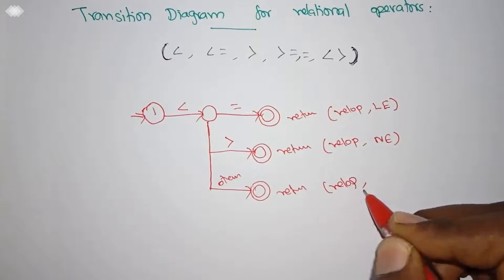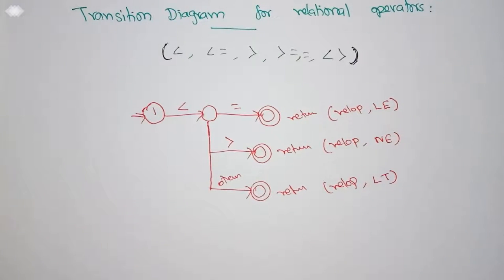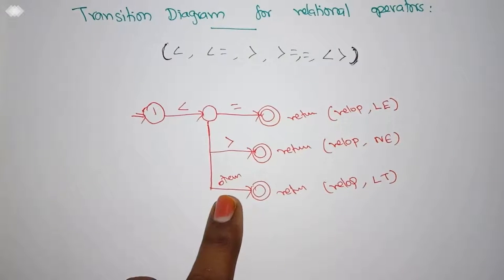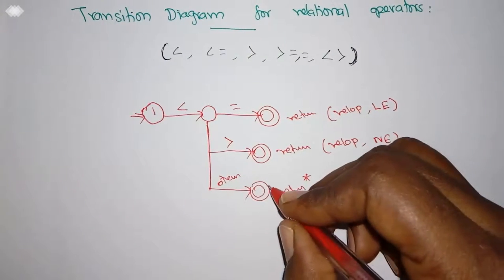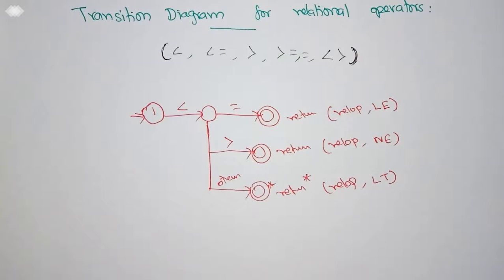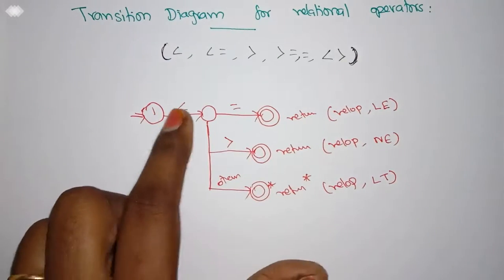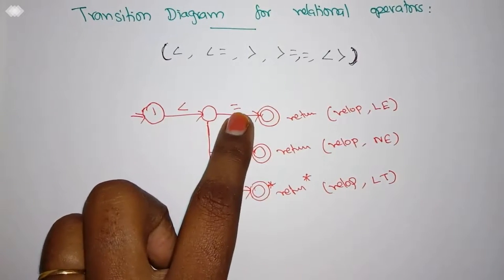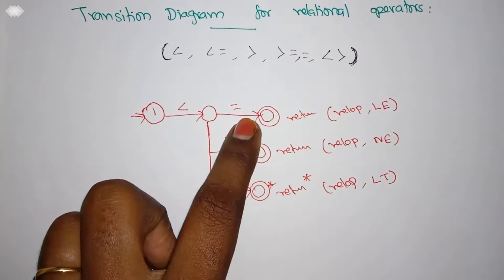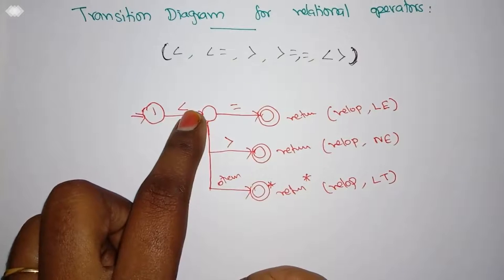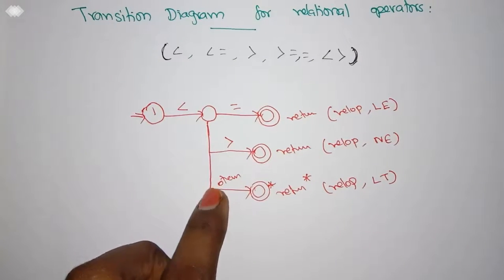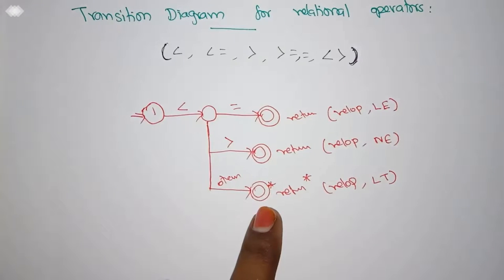We return it as a relational operator less-than. But the problem here is we have read one more character of the next lexeme to process this, so that has to be returned back. We use this asterisk symbol, which denotes we have to move a step back for the next processing. Here, less-than-or-equal-to has both symbols involved in a lexeme — the token is relational operator LE. But here only the less-than is a lexeme, and the extra character is part of the next lexeme, so we have to move a step backwards for processing.